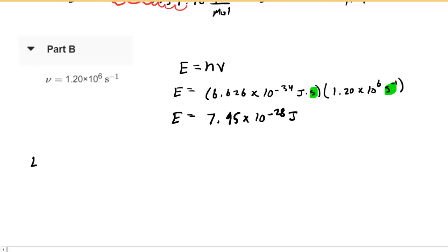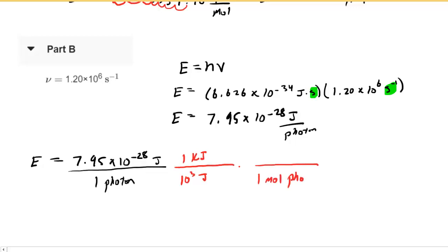Let's set up the conversion to get that into kilojoules per mole. Remember this is joules per one photon. We're going to need to convert that in the exact same way we just did. We can put this joules over one photon. As before, one kilojoule is 10 to the third joules. And then 1 mole of photons is 6.02 times 10 to the 23rd photons.